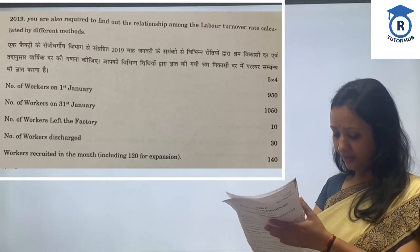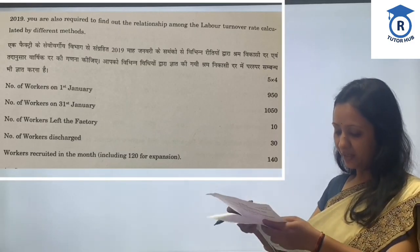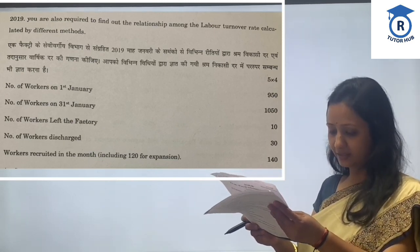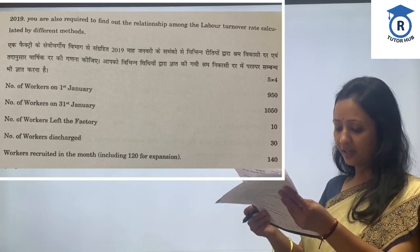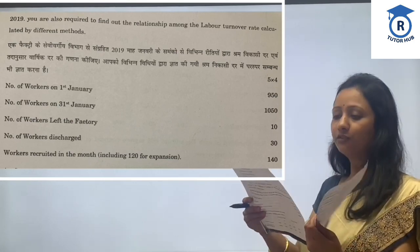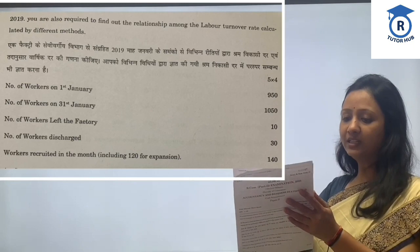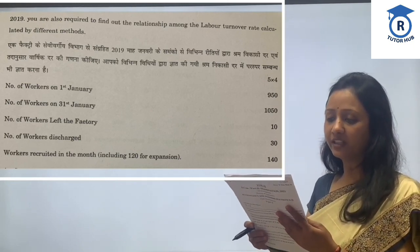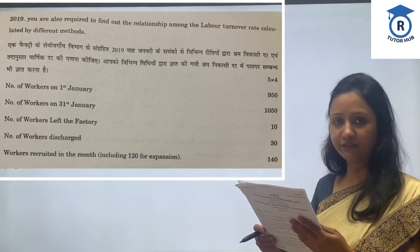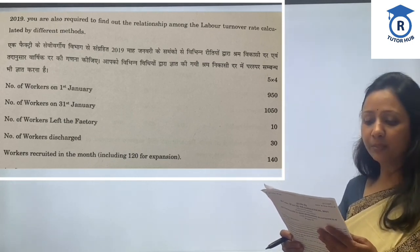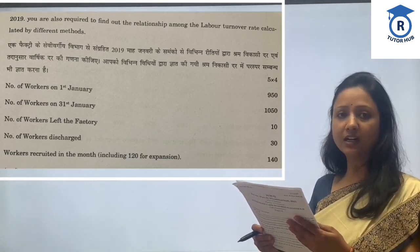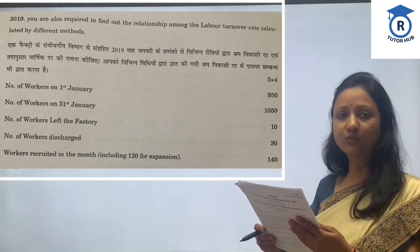The first practical question is to calculate labor turnover rate and equivalent annual rates under different methods, from data collected from the personal department of a factory for the month of January 2019. We are also required to find out the relationship among the labor turnover rates calculated by different methods. Number of workers on 1st January is 950, and number of workers on 31st January is 1050.